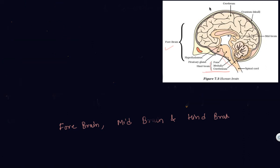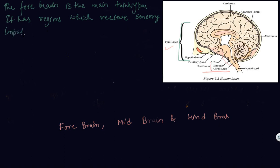Now we are discussing the main functions of each part. The forebrain in humans is the main thinking part. It has regions which receive sensory impulses from various receptors.